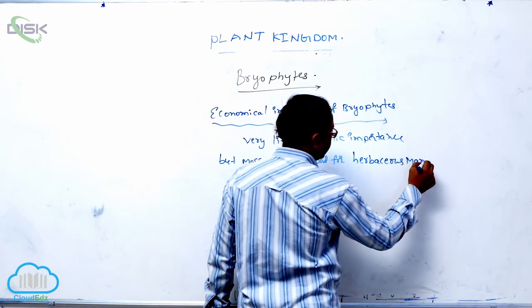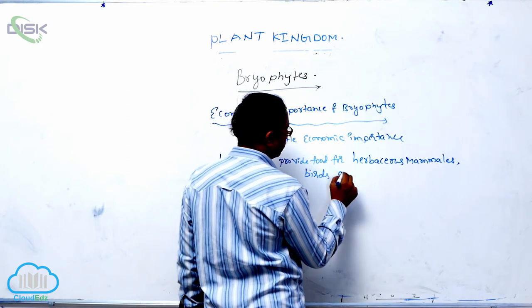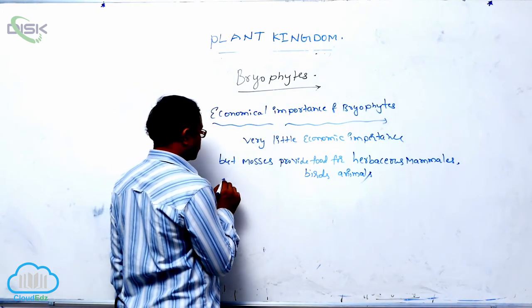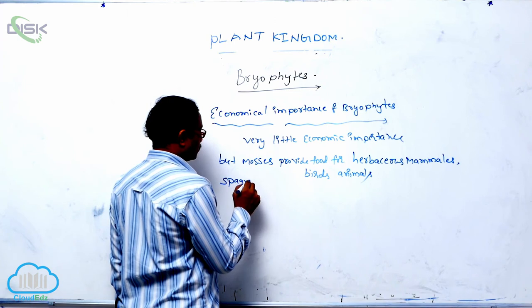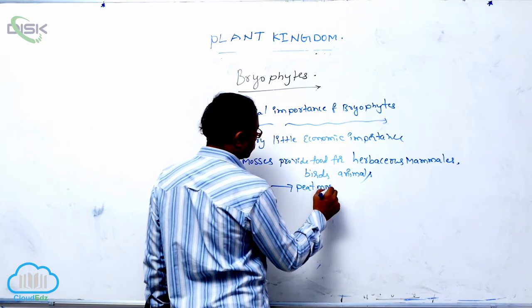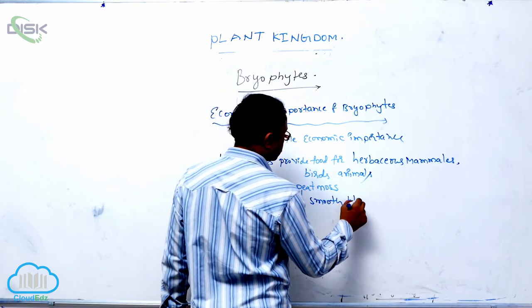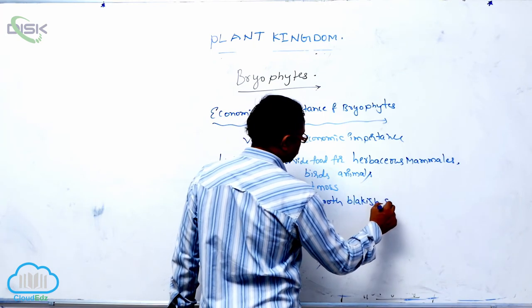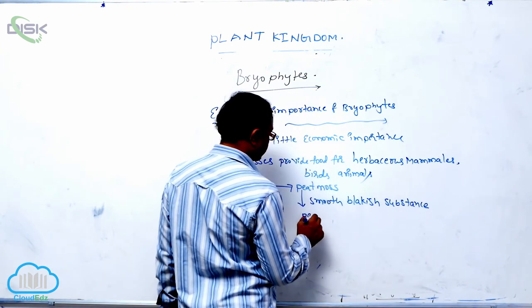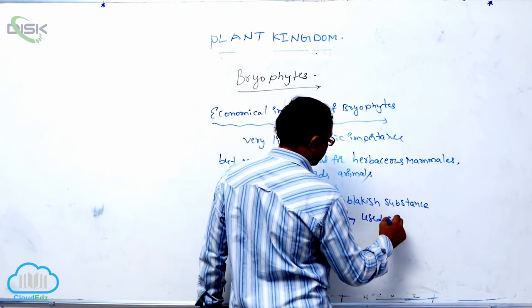For herbaceous mammals, birds, and some animals. In this mostly, it is known as Sphagnum. Sphagnum, it is also known as the peat moss. Why it is known as the peat moss? It is producing smooth, blackish substance. That is known as the peat. Peat used as that fuel.